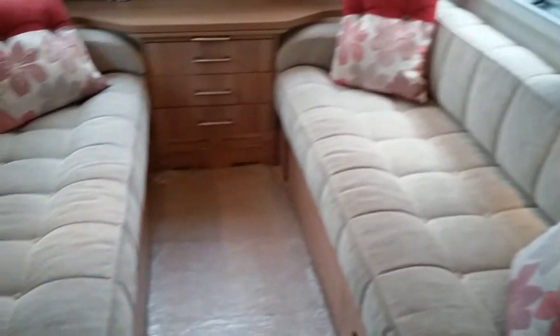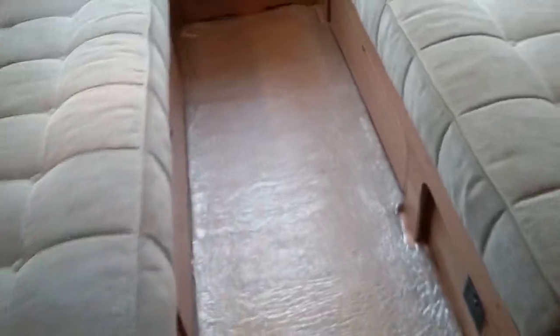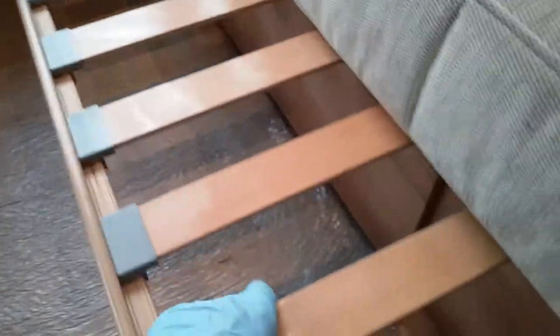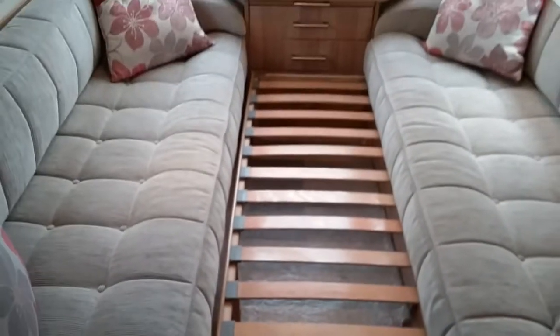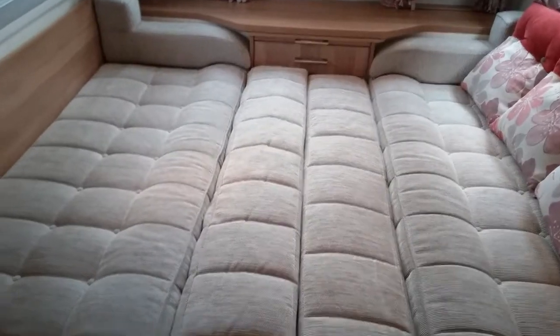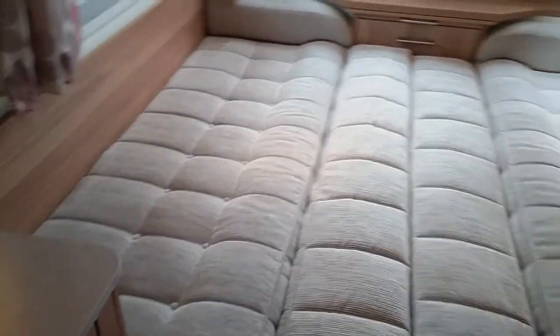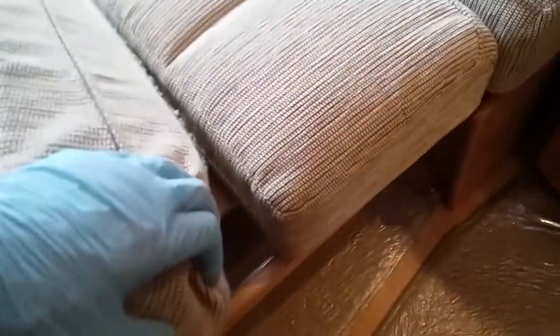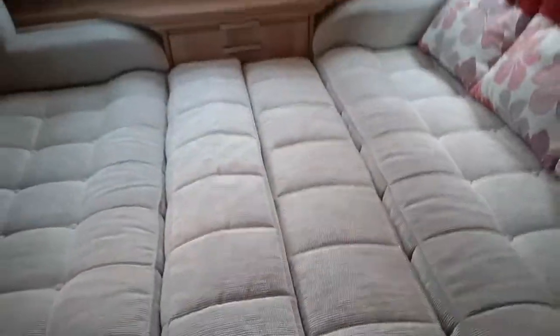With the front beds you can have two singles or one large double bed. For the double just slightly lift up and then pull across. And then just pop the cushions into place, just like so. I personally flip the cushions over, as they are a lot flatter on the other side, so it makes them a little less bumpy.